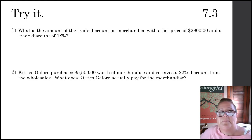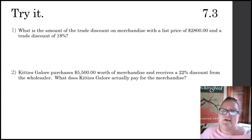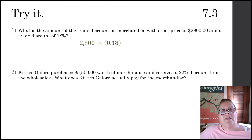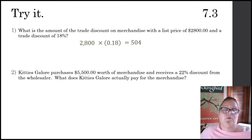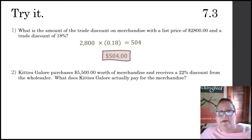Let's try some problems. What is the amount of a trade discount on merchandise that has a list price of $2,800 and a trade discount of 18%? The list price is $2,800 and the trade discount rate is 18%. We're going to take the list price of $2,800 and multiply it by 18%, or 0.18 as a decimal. When we multiply that out using the calculator, we get $504. That is the amount of the trade discount.